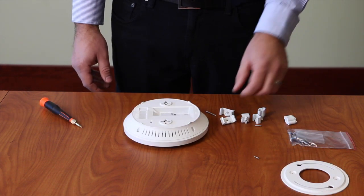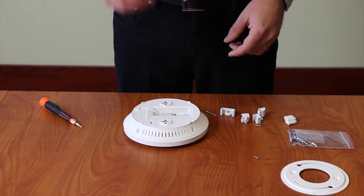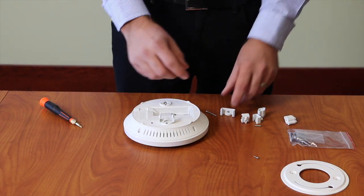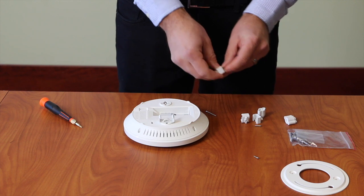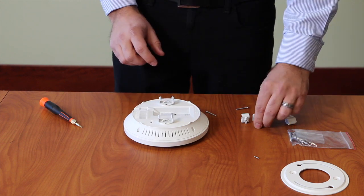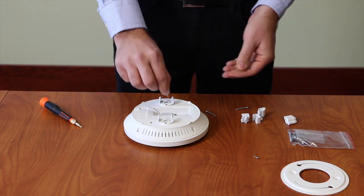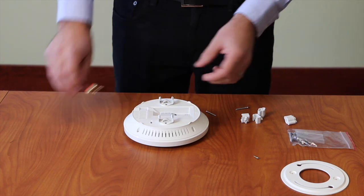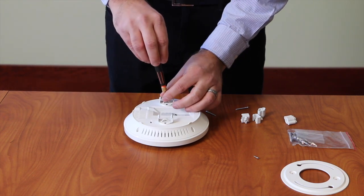To mount on a drop ceiling, you have two options. One is you can mount it flush with the access point. Simply enter the clips and use a shorter screw, drop it in there, and screw it tight.